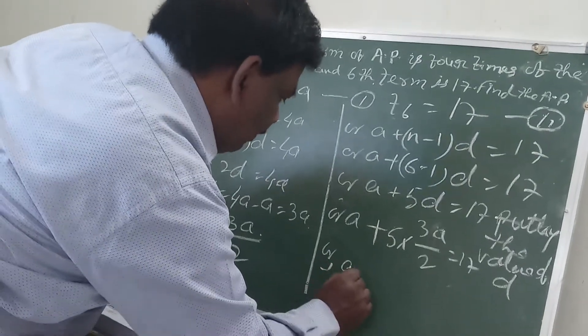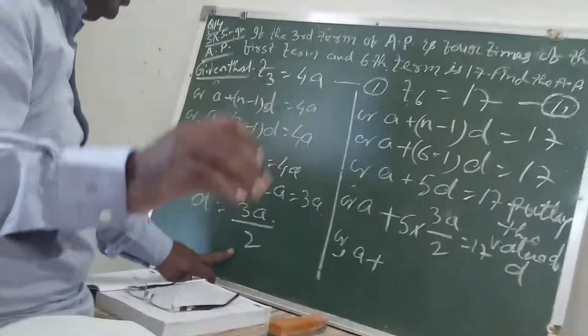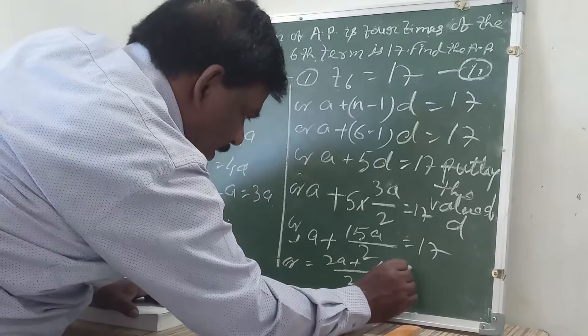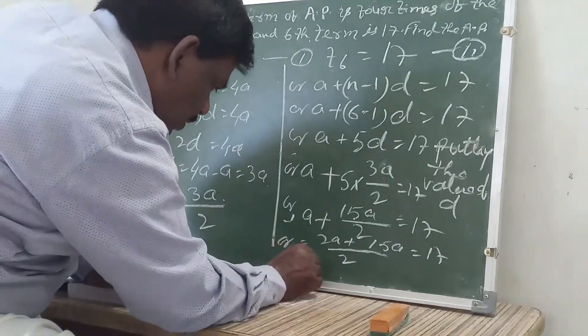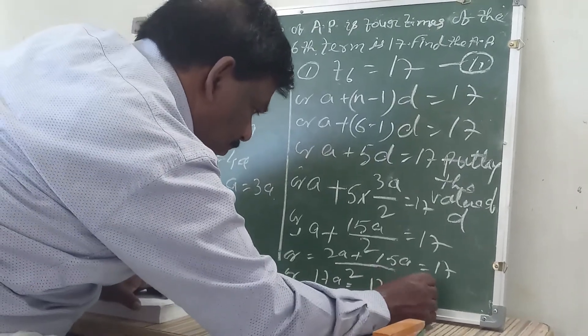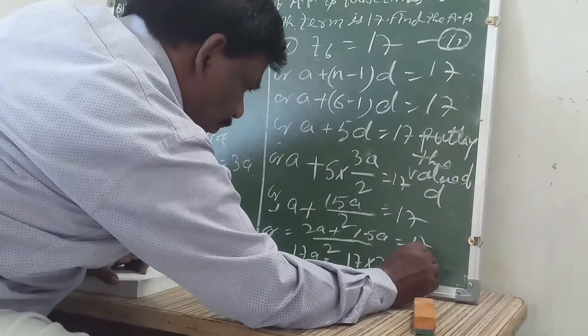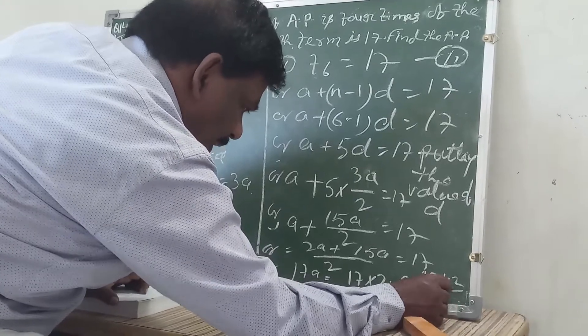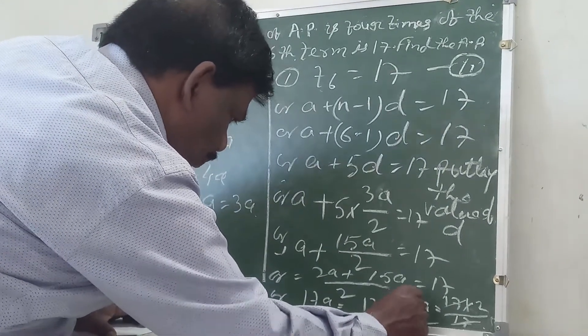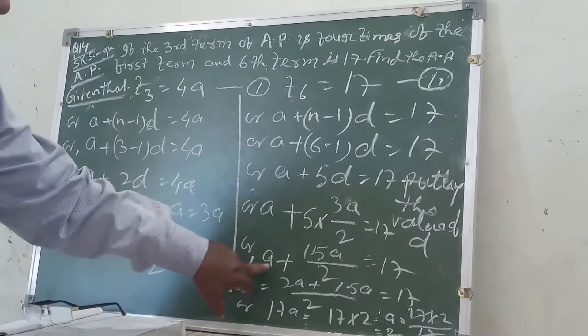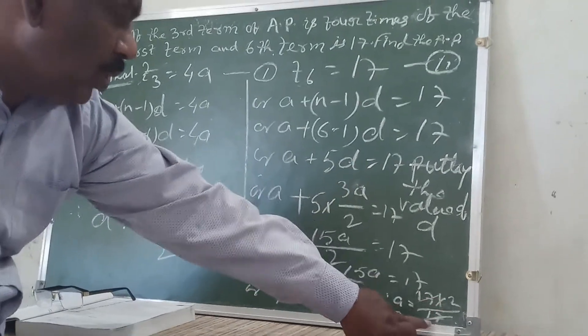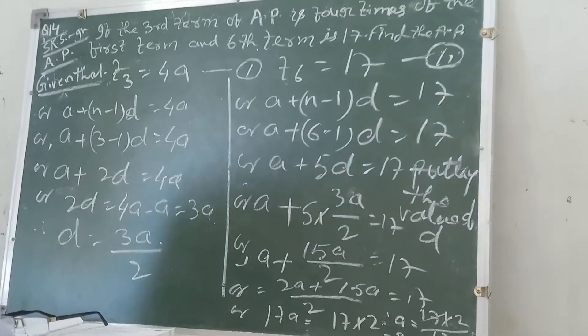Or A plus, taking LCM: 2A plus 15A by 2 equals 17, or 17A equals 17 into 2. Therefore A equals 17 into 2 by 17, A equals 2.